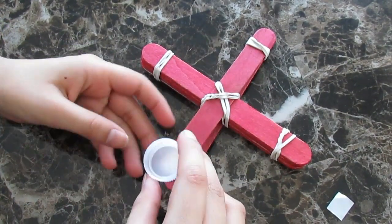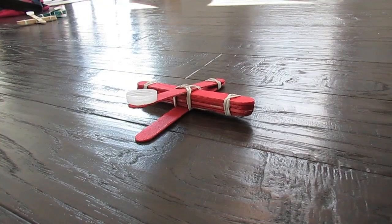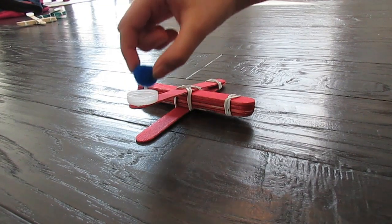Set the bottle cap on top of the popsicle stick using double-sided tape. Place a pom-pom on the bottle cap.